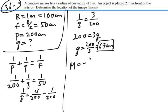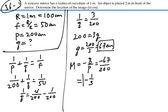Magnification, negative q over p, would be negative 67 over 200, which would be negative one-third. Based on that, we would expect that our image is smaller than our object by three times, and it is inverted.